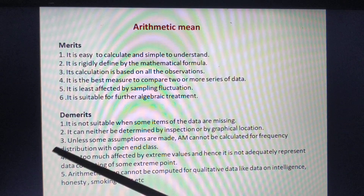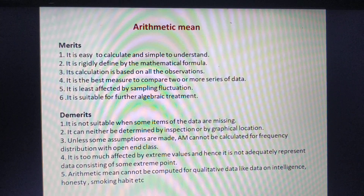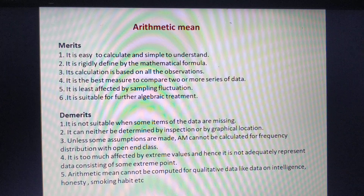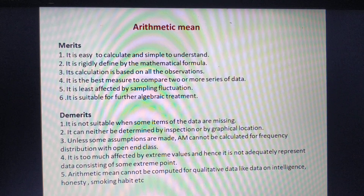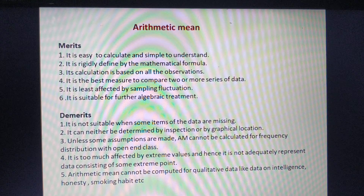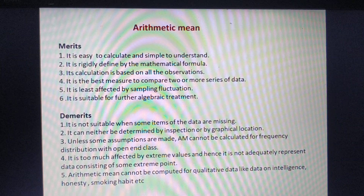The second demerit is that it can neither be determined by inspection nor by graphical location. Unlike mode, which can be identified by the highest frequency through inspection, or median and mode which can be found graphically, arithmetic mean cannot be found by inspection or graphically.